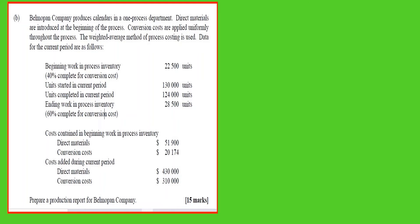We read the requirements first. We are required to prepare a production report for Belmo Company. When we look at the problem, we realize it involves process costing. Belmo Company produces calendars in one process department. Direct materials are introduced at the beginning of the process, and conversion costs are applied uniformly throughout the process.